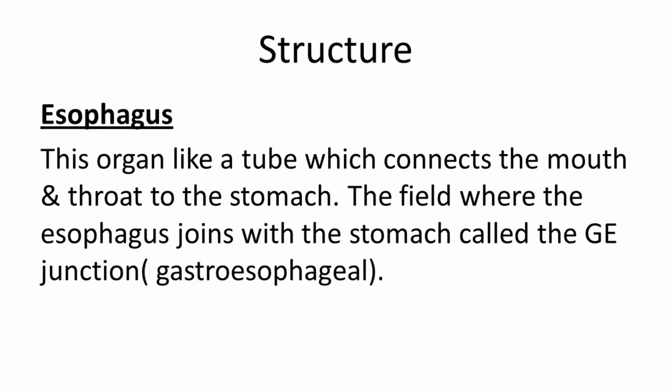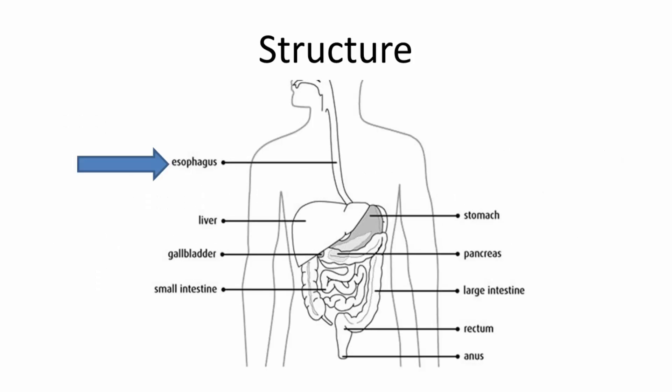The stomach is part of the digestive system and is connected to the esophagus — an organ like a tube which connects the mouth and throat to the stomach. The area where the esophagus joins with the stomach is called the GE Junction, or gastroesophageal junction.